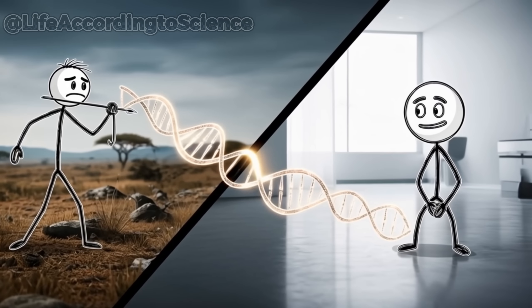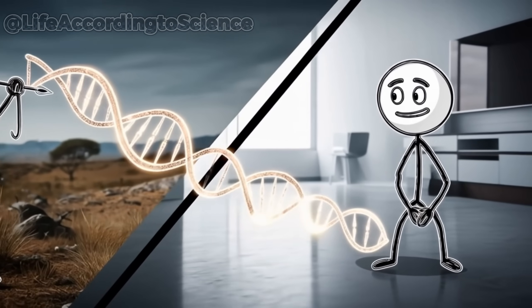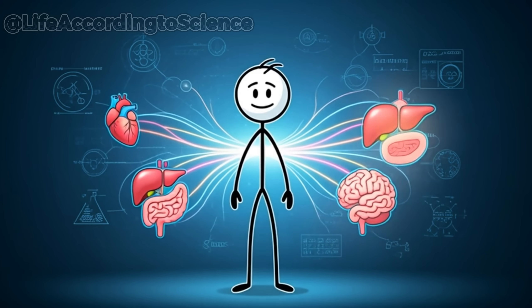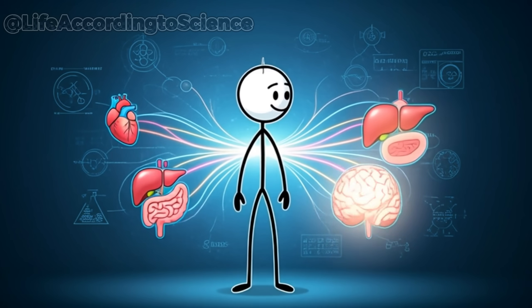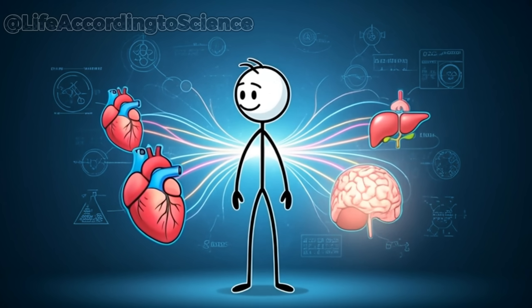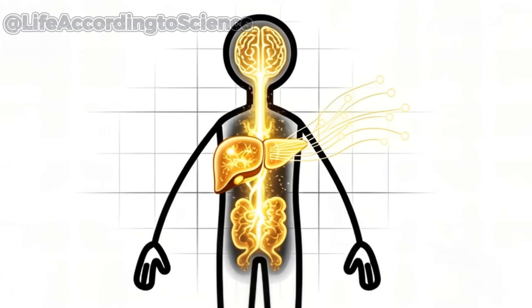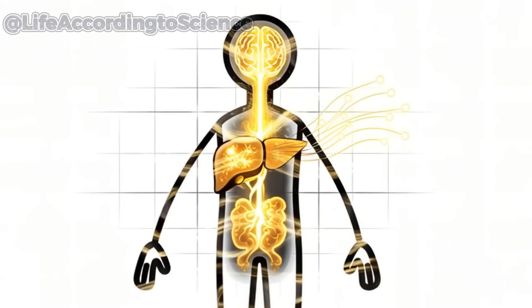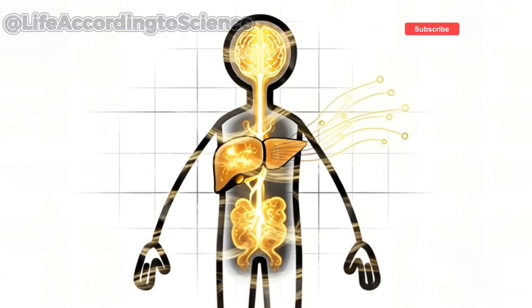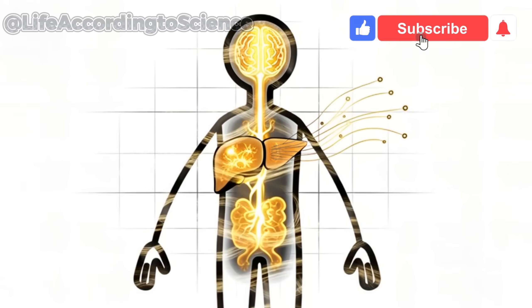Around the 6th to 8th hour, your body understands the situation. It's not getting external energy anytime soon, so it activates what scientists call metabolic flexibility. Your liver starts converting stored glycogen into glucose, slowly feeding your brain. When those stores begin to run low, a deeper mechanism awakens.